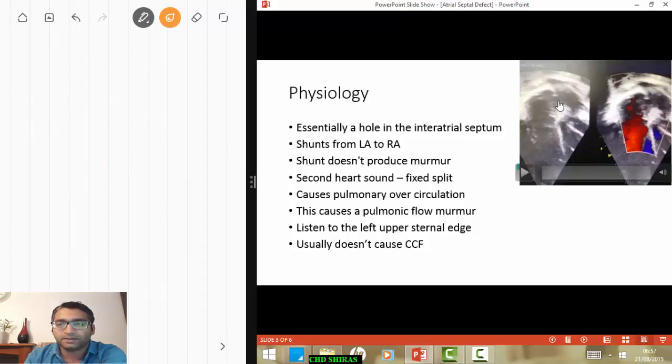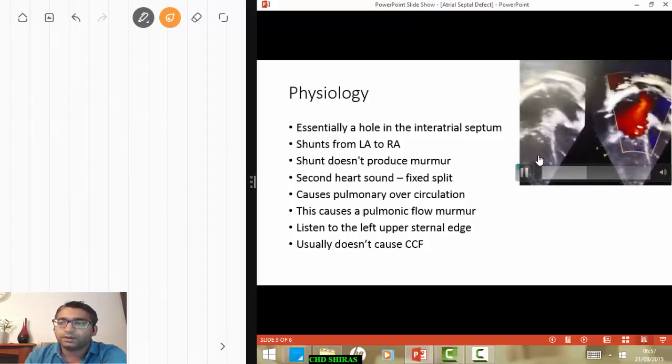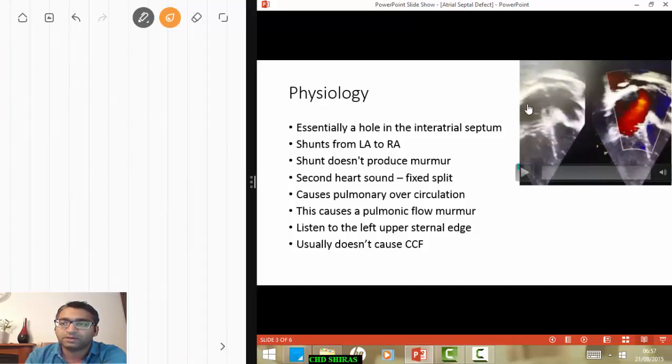When you have a defect in the septum in the middle, you call it a secundum type of atrial septal defect. Let me play this clip for you. You can see this red jet coming from the left atria into the right atria, so this blood flow coming from the left atria to the right atria.